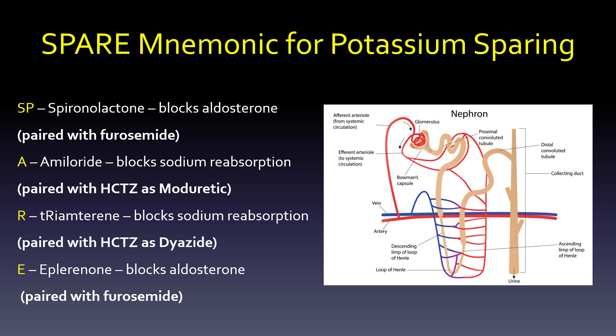The main side effect of a potassium-sparing diuretic is hyperkalemia. The SPARE mnemonic: SP for spironolactone, A for amiloride, R for triamterene, E for eplerenone. Spironolactone and eplerenone go with furosemide. Amiloride and triamterene pair so well with hydrochlorothiazide that there are combination medications: amiloride with hydrochlorothiazide is Moduretic, and triamterene with hydrochlorothiazide is Dyazide.